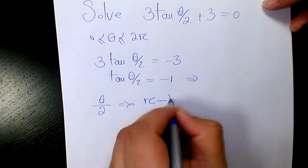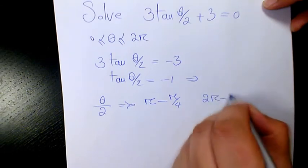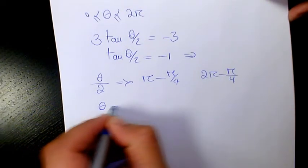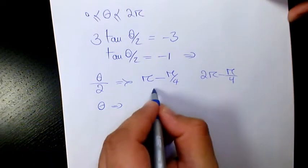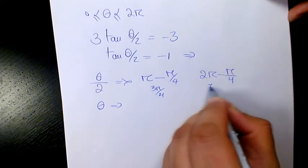π minus π/4 and 2π minus π/4. So that's going to be θ equals to... this one is actually 3π/4 and this one is going to be 7π/4.